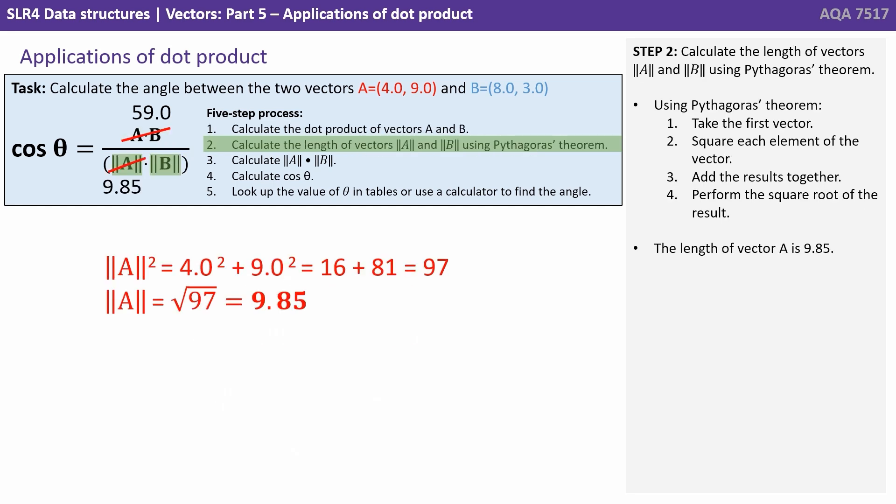Step two is to calculate the lengths of vectors A and B using Pythagoras' theorem. So to do this we take the first vector, square each element of the vector, add the results together and perform the square root of the result. So the length of vector A is 9.85. We do the same for vector B and discover its length is 8.54.